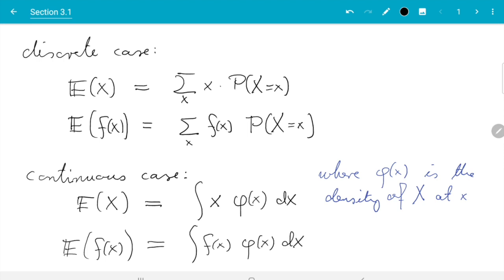So we have expectation of f of x equals, and the logic is the same as for the discrete case, we get integral f of x phi of x dx. And I did not write the domain of integration. Here we integrate over all possible values of x.